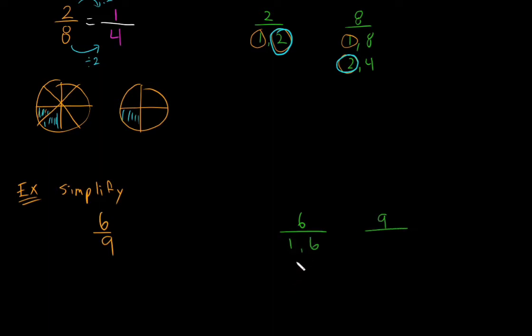1 and 6, 2 and 3. 1 and 9, 3 and 3. We look for the greatest one that they have in common. In this case, it's 3. So that's the number that we're going to divide the numerator and the denominator by.